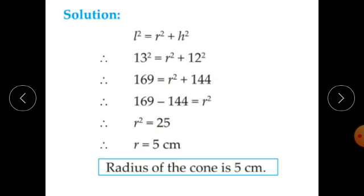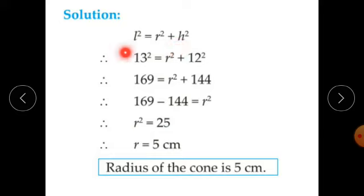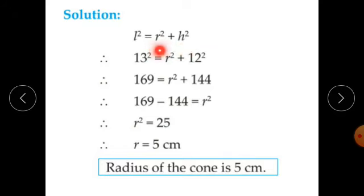Solution. We know L squared equals R squared plus H squared, where L is slant height, R is radius of the base, and H is perpendicular height of the cone.